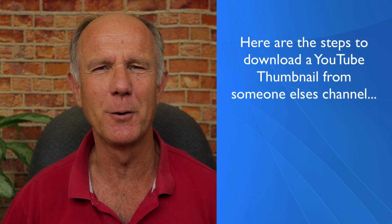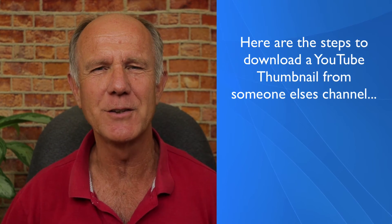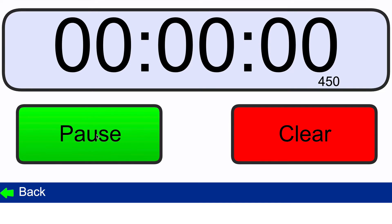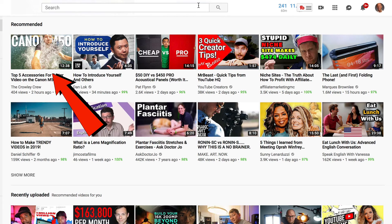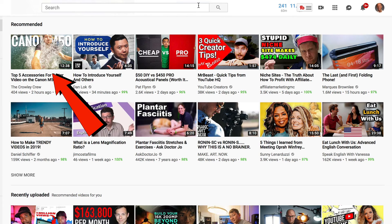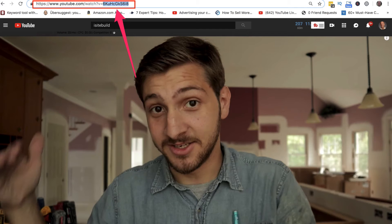Here are the steps to download a YouTube thumbnail from someone else's channel. Let's start the clock. Step one, select the video that you want to download the thumbnail from. I like this thumbnail from my recommended videos. Step two, copy the ID from the video URL. Here's the video ID — going to copy that.